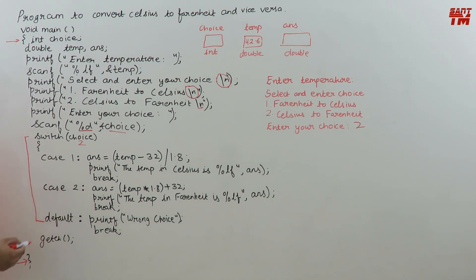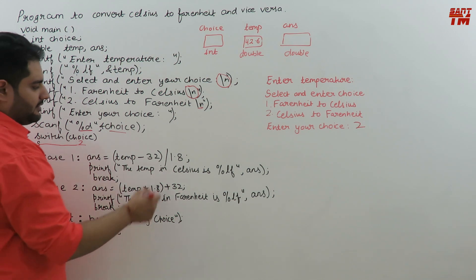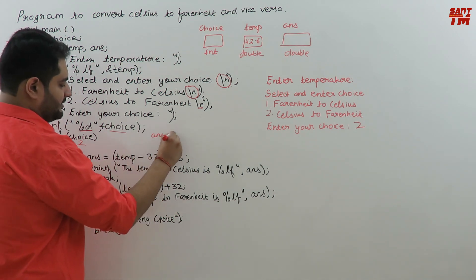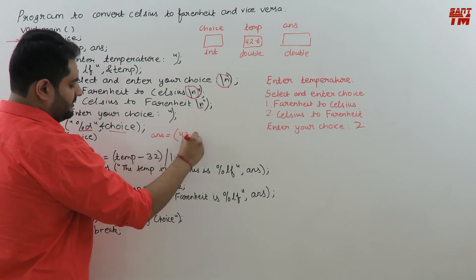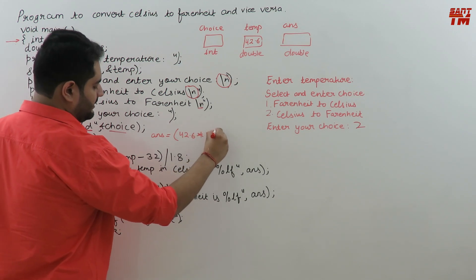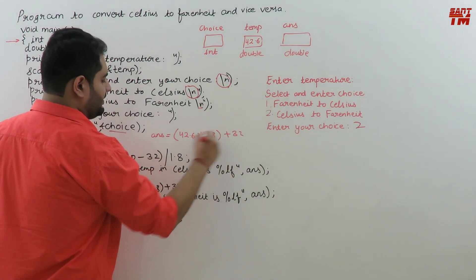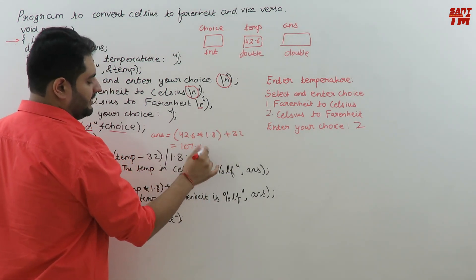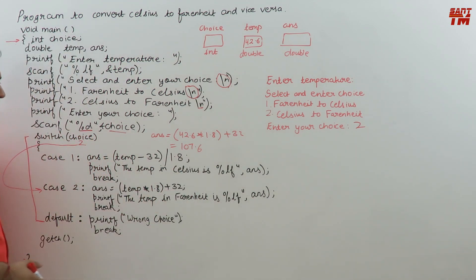Using the switch statement we'll get our answer. This 2 will match with case 2. Case 2 has ans equals temp times 1.8 plus 32, so it will be ans equals 42.6 times 1.8 plus 32, which comes around 107.6. I'm not exact but you can calculate it.